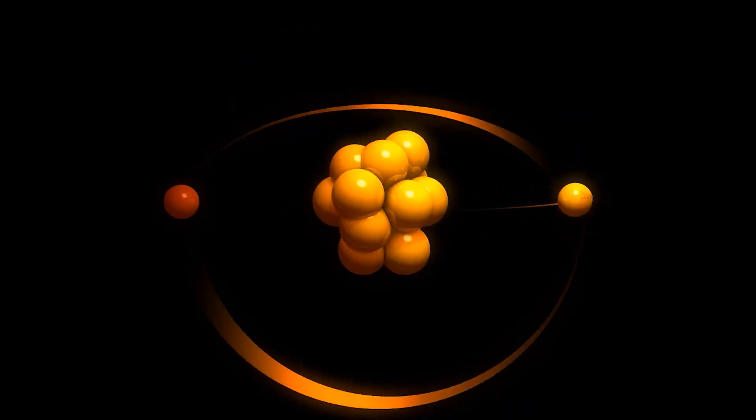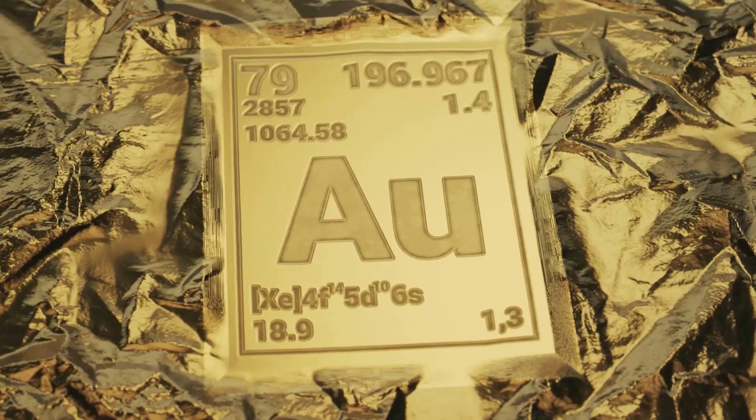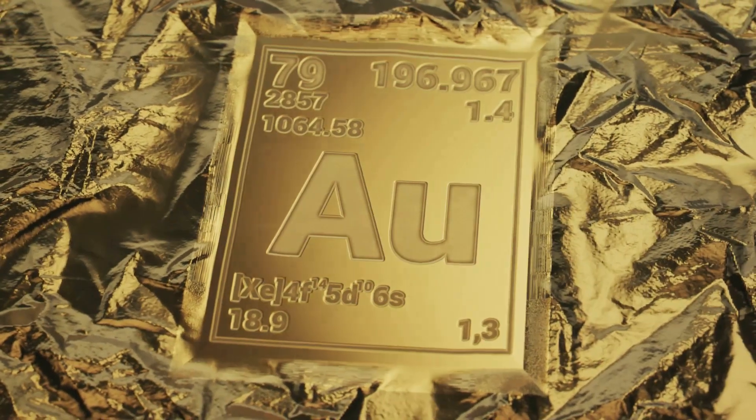A lead nucleus has 82 protons. But in these collisions, a photon can kick out three of those protons, transforming the atom into gold, specifically gold-197, the only stable isotope of gold.